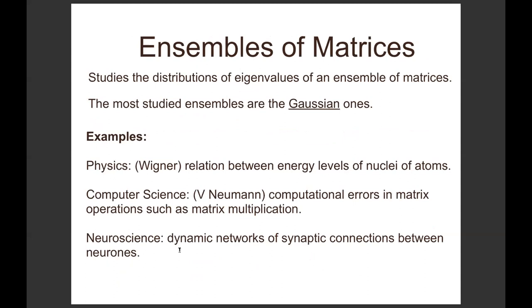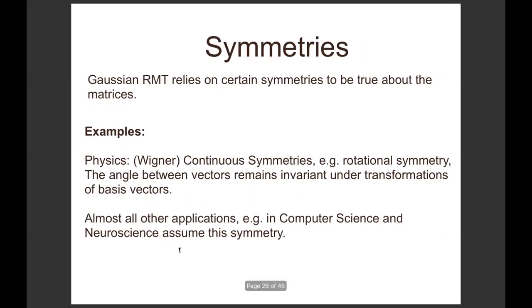In DisCoCat we've got sets or ensembles of matrices: lots of adjectives, lots of verbs, lots of adverbs. They each have matrices. What can we say here? There is an area called random matrix theory coming from physics which talks about distributions of eigenvalues of ensembles of matrices. Traditionally, matrices that came from physics were mostly Gaussian, so random matrix theory is mostly studied for ensembles that have Gaussian matrices. To my surprise, it has applications in computer science with the work of von Neumann, who used random matrix theory to talk about computational errors in matrix operations. In general, it has been applied to many different types of dynamical systems like financial systems, complex systems, and in neuroscience, where you have dynamic networks of synaptic connections between the neurons and you study the behavior of the mind using the distributions of eigenvalues.